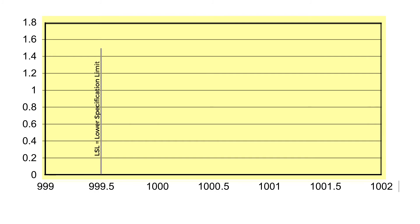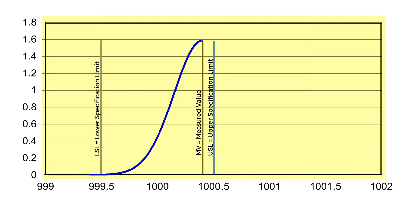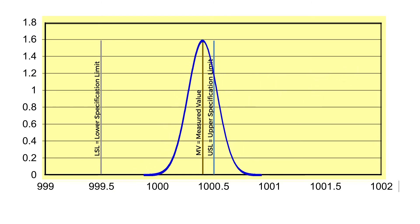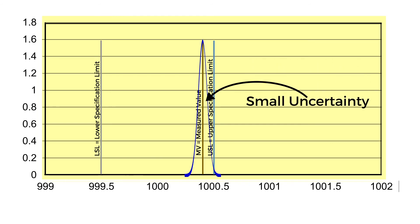When we use the appropriate formula and draw the concept, we draw the lower and upper specification limits at 999.5 and 1000.5. Next, we put in the location of the measurement at 1000.4. The calculated calibration process uncertainty determines the width of the distribution. As you can see, the larger the measurement uncertainty, the larger the risk relating to the measurement location. The smaller the uncertainty, the lower the risk, such as the case in this example when Morehouse performs the calibration.